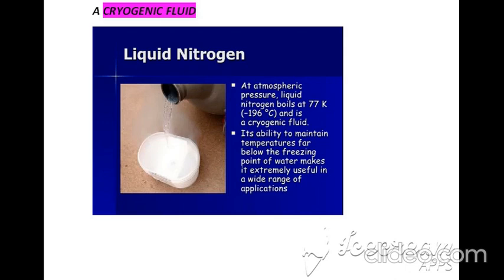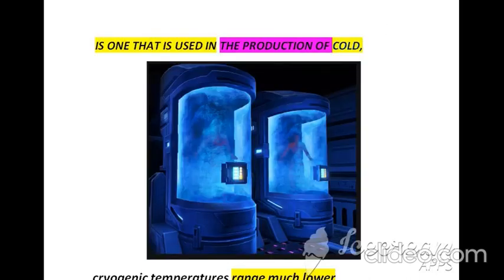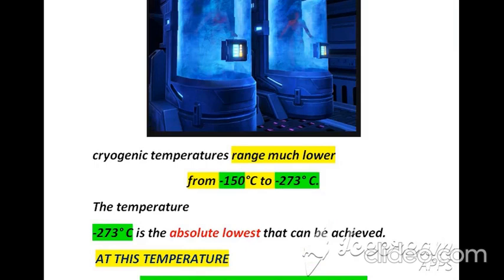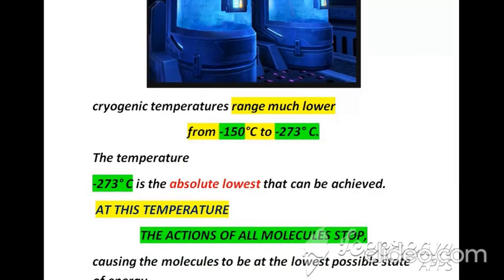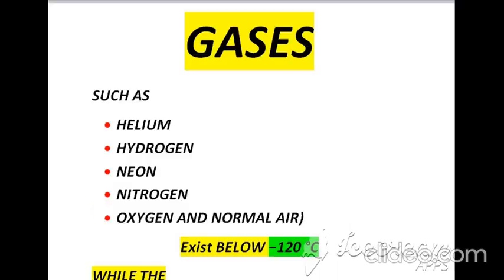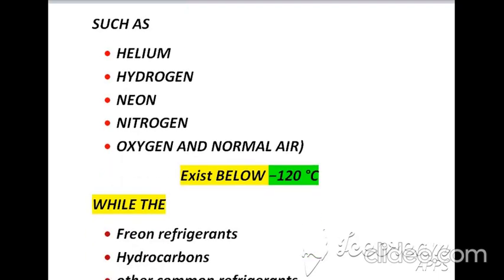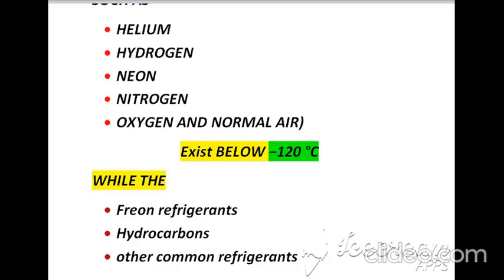The leaf has a white layer of snow referred to as frost. The driving force of the cryogenic process is cryogenic fluid — that fluid decreases temperature to obtain cryogenic temperatures, and an example of such fluid is liquid nitrogen. The temperature range of the cryogenic process is between negative 150°C and negative 273°C. At the lower limit of negative 273°C, the motion of all molecules stops. Gases such as helium, hydrogen, neon, nitrogen, oxygen, and normal air all exist below negative 120°C.